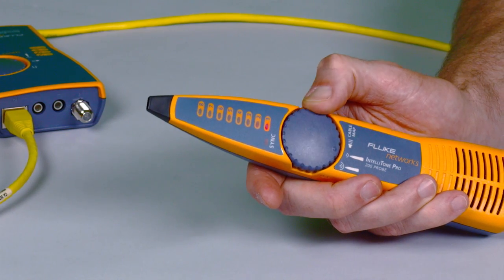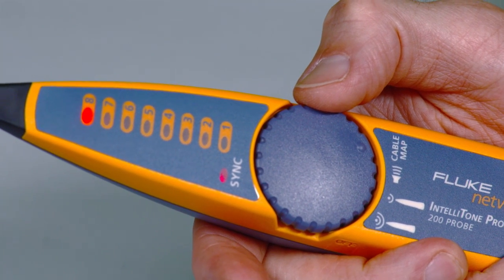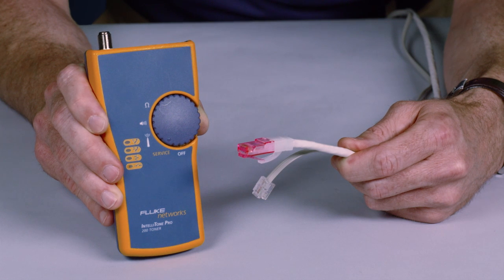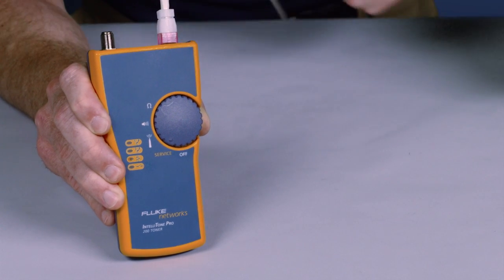The toner and probe feature a thumb wheel ergonomic design and status indicators give easy-to-read feedback. The mystery of identifying cable services becomes history. Know if it's a data, telco, or dead jack instantly.